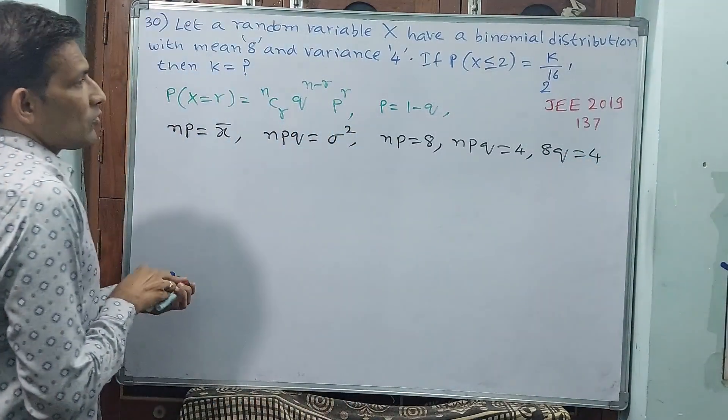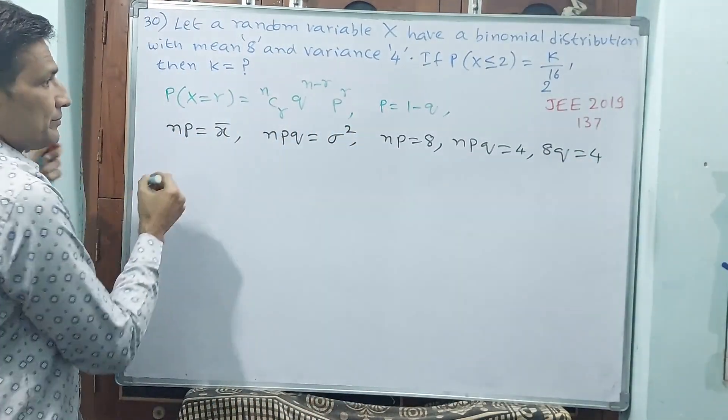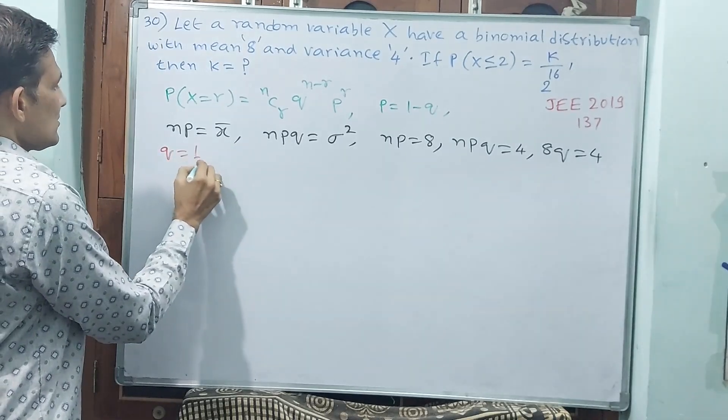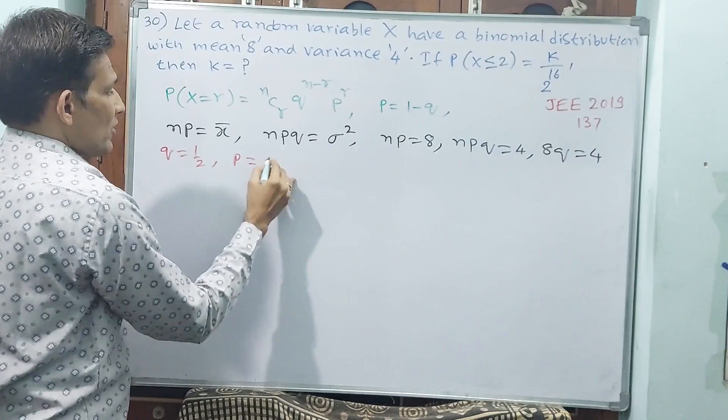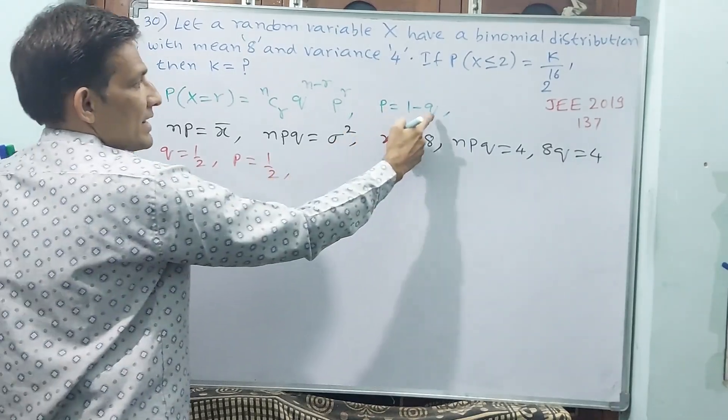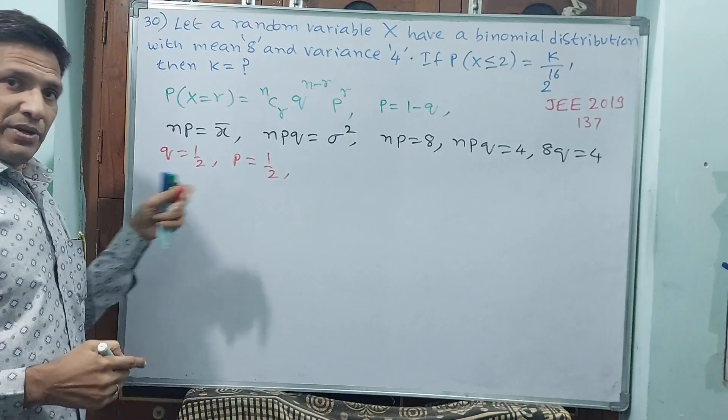In that case, p = 1 - 1/2 = 1/2. Q is 1/2, that is why p also is 1/2.